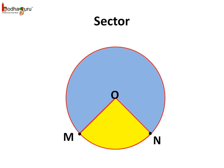Thus an arc bounded by the two radii divides the circle into two parts and each part is called a sector. Here the blue colored part is a sector and the yellow colored part is another sector.